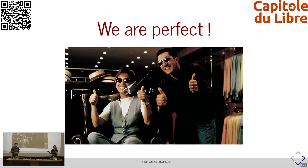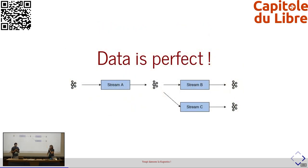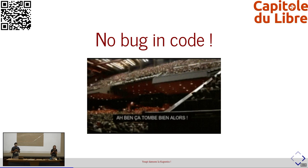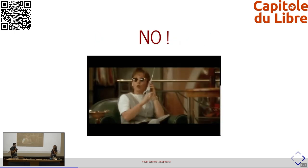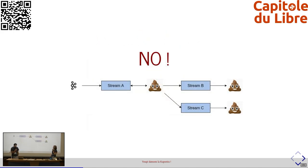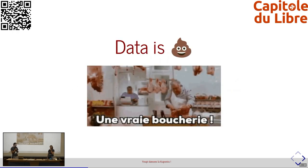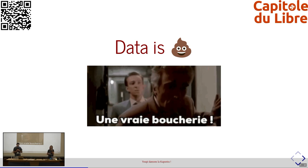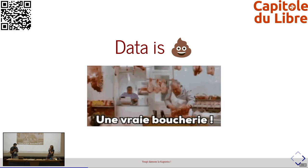Bien sûr, nous sommes parfaits. C'est bien connu. Un bug peut arriver, un problème peut arriver. Un simple stream dans notre data pipeline peut produire une donnée erronée pour différentes raisons. Et le fait d'avoir un enchaînement de traitements en cascade fait qu'une seule erreur peut être diffusée un peu partout. On se rend compte souvent trop tard, c'est-à-dire après le client. Et là, pour corriger, ça va être compliqué.